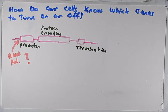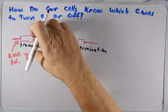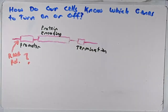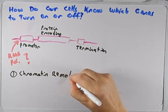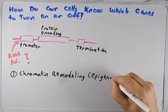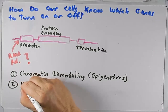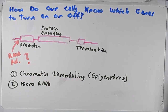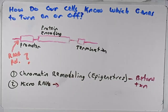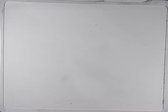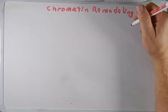We could teach whole semesters on this specific question of how we turn a gene on or off. But we're going to focus on two main areas. The first is chromatin remodeling, and when we talk about that we'll also talk about epigenetics. The second is microRNAs. Chromatin remodeling occurs before transcription, and microRNAs — this way of regulating a gene — occurs after transcription.